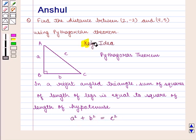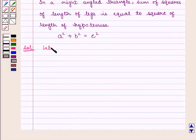With this key idea, let us proceed to the solution. Now let us suppose A is the point with coordinates (2,-2) and B the point with coordinates (4,5).